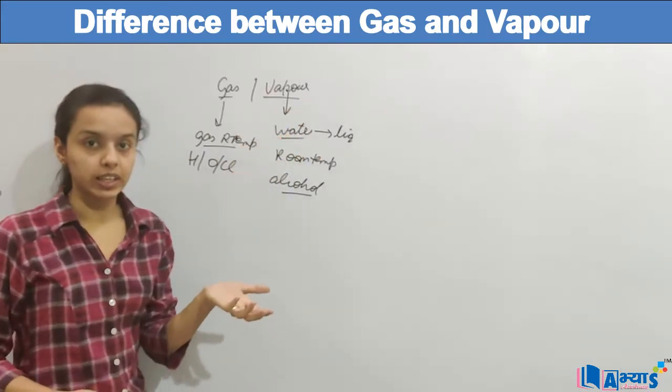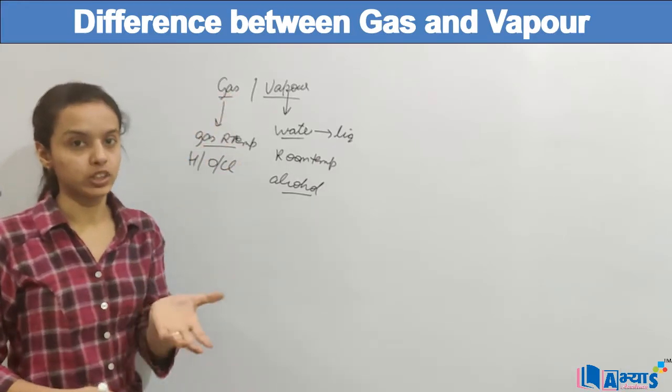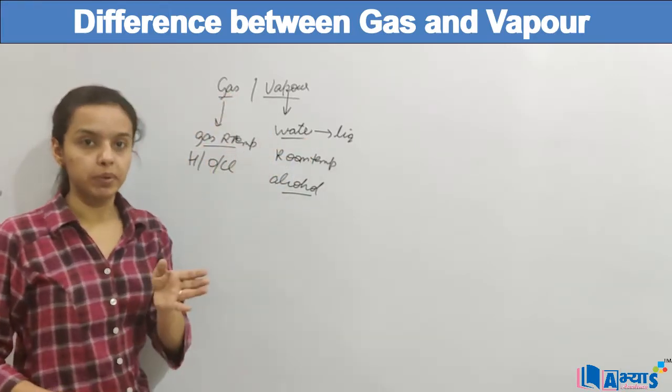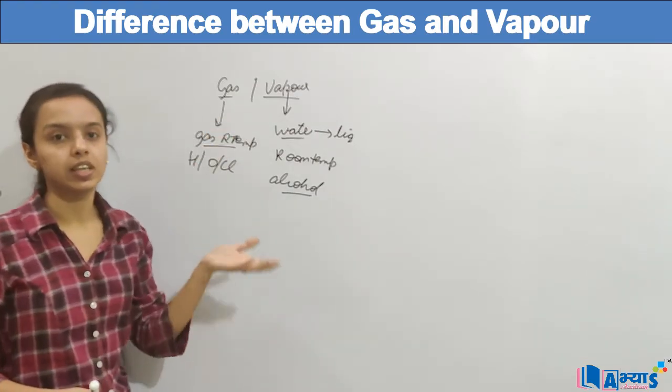vapours have a liquid state like in the case of water, and in the gas, they are gaseous at room temperature. And when this liquid becomes vapour, we say they have formed the water vapour and they have formed the gaseous state.